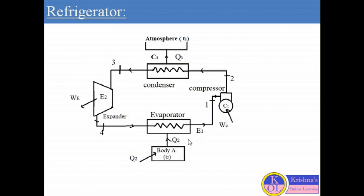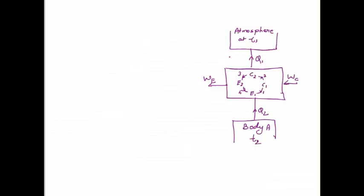This specific cycle — E1, C1, C2, and E2 — makes the device a refrigerator. This process shows the working of the refrigerator. This diagram represents the complete process of the refrigerator.